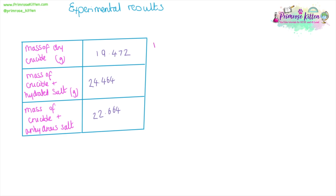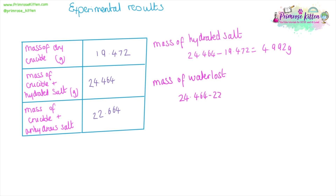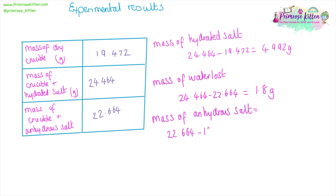Here are some experimental results. You can see the mass of the crucible, the mass of the crucible with the hydrated salts, and the mass of the crucible with the anhydrous salts. We need to work out the mass of the hydrated salts — that is the mass of crucible plus hydrated salt, minus the mass of the crucible. We then work out how much water was lost: mass of crucible and hydrated salts, minus mass of crucible and anhydrous salts. Finally, mass of the anhydrous salt is mass of crucible and anhydrous salt, minus the mass of the crucible.